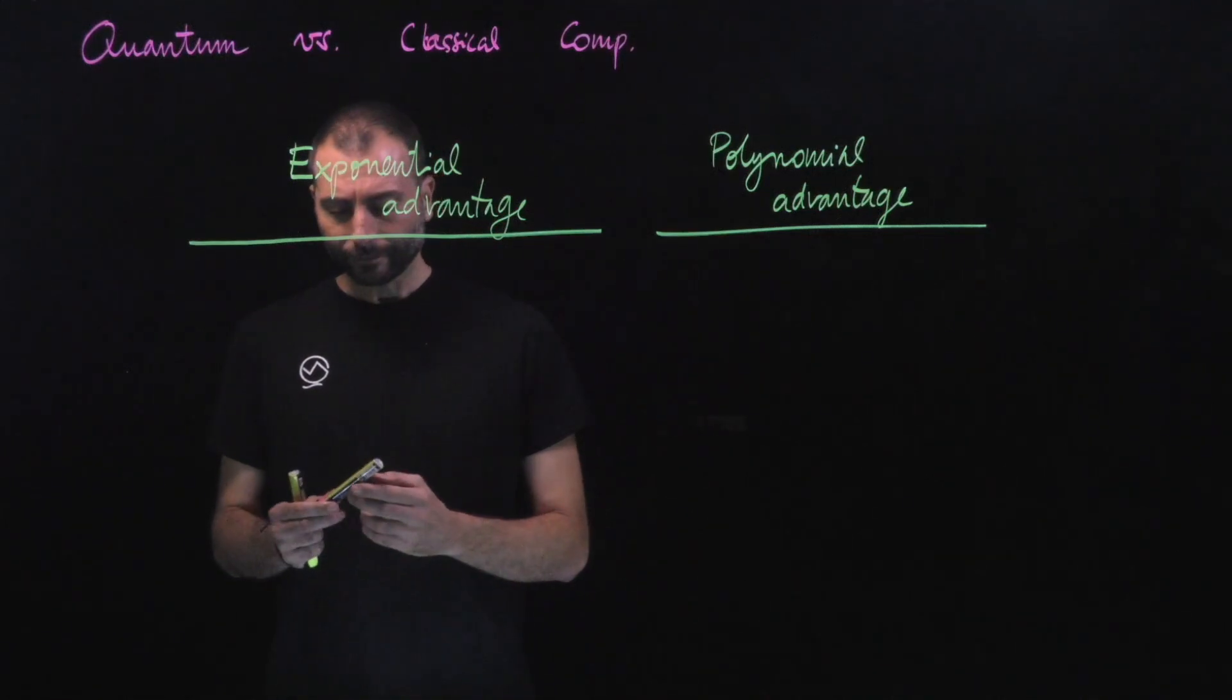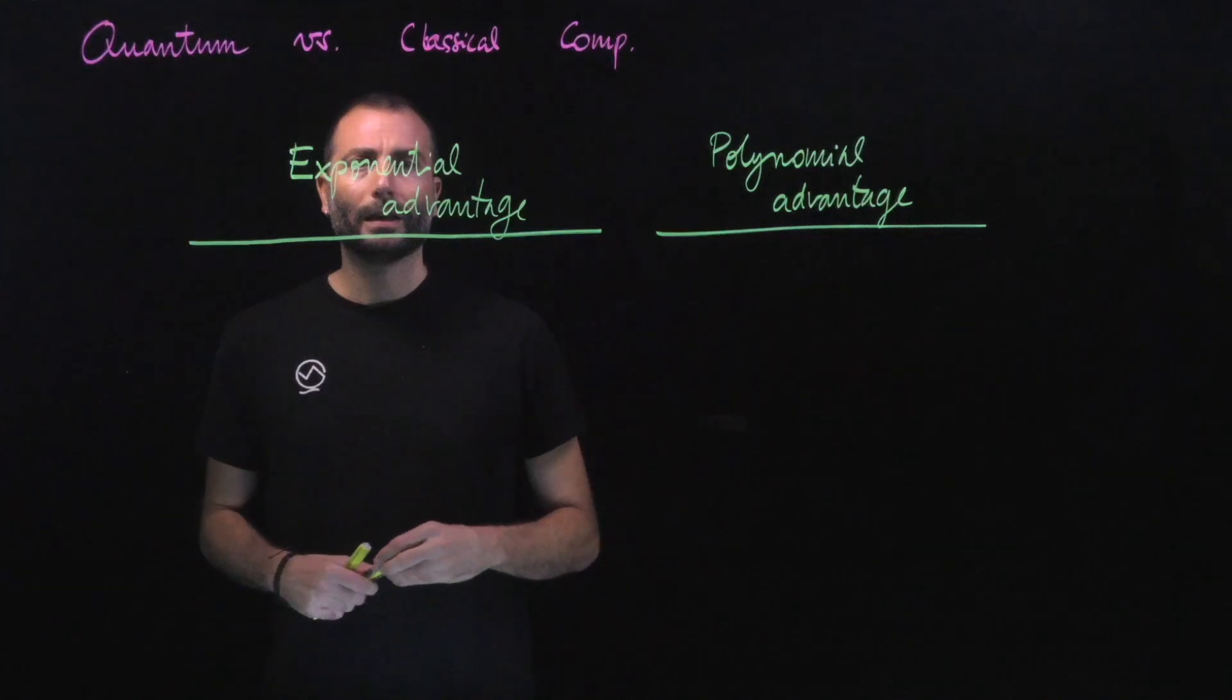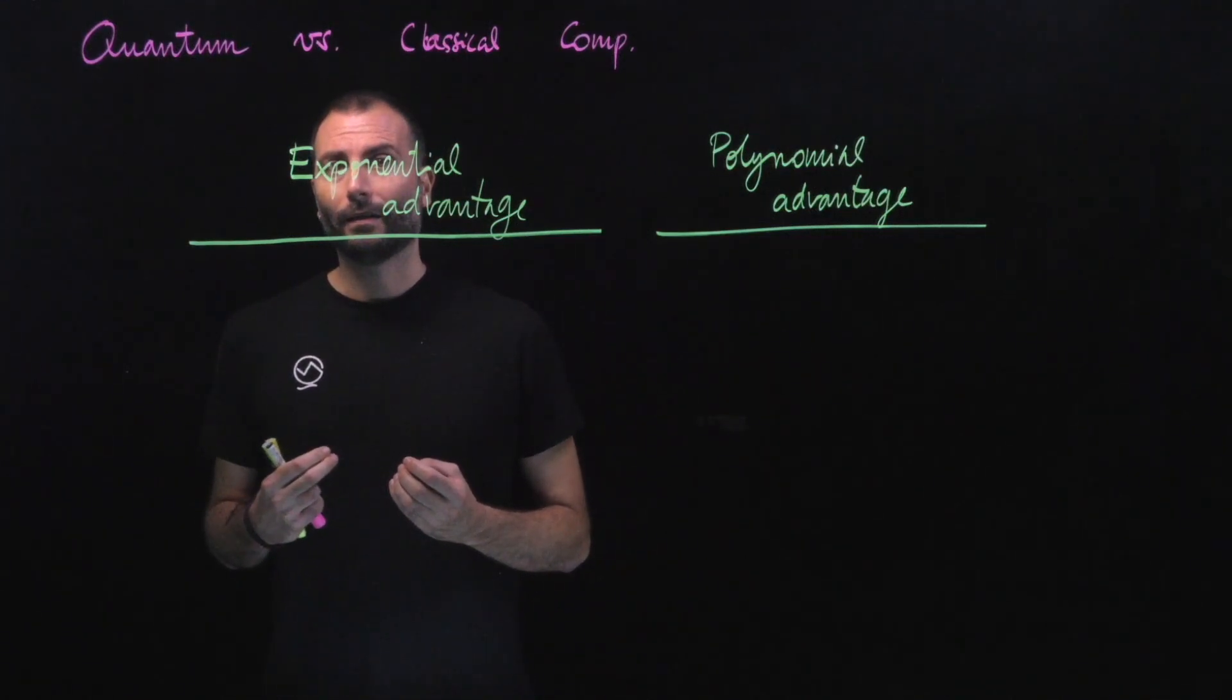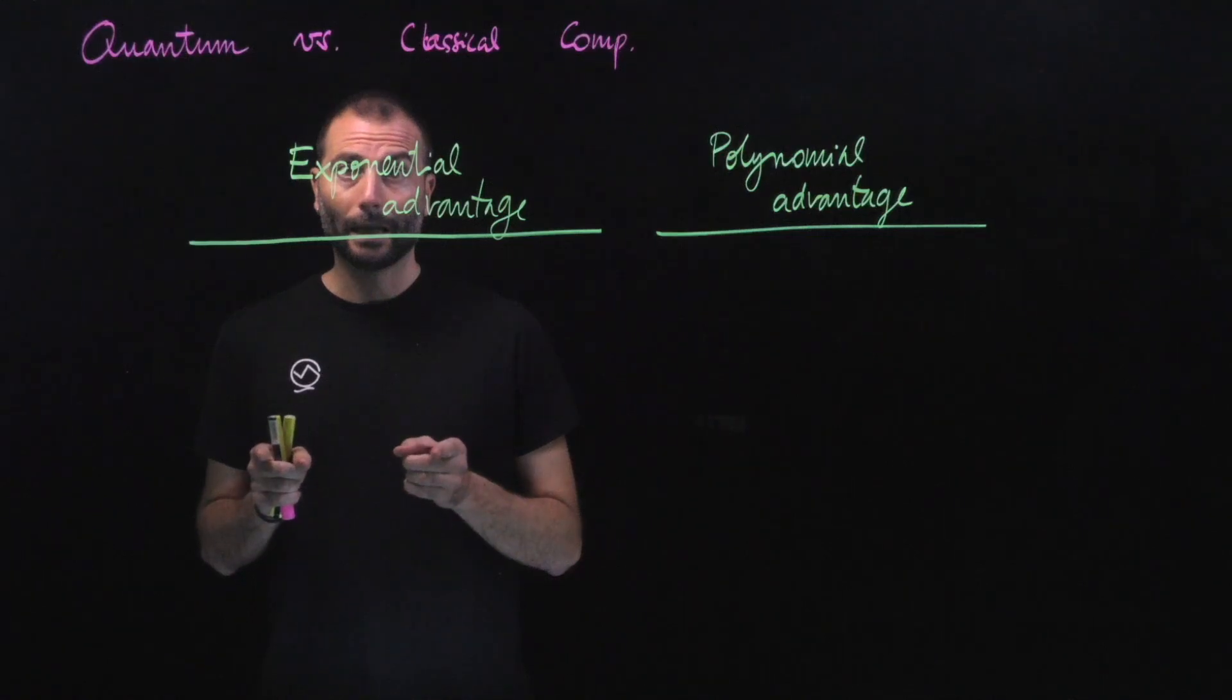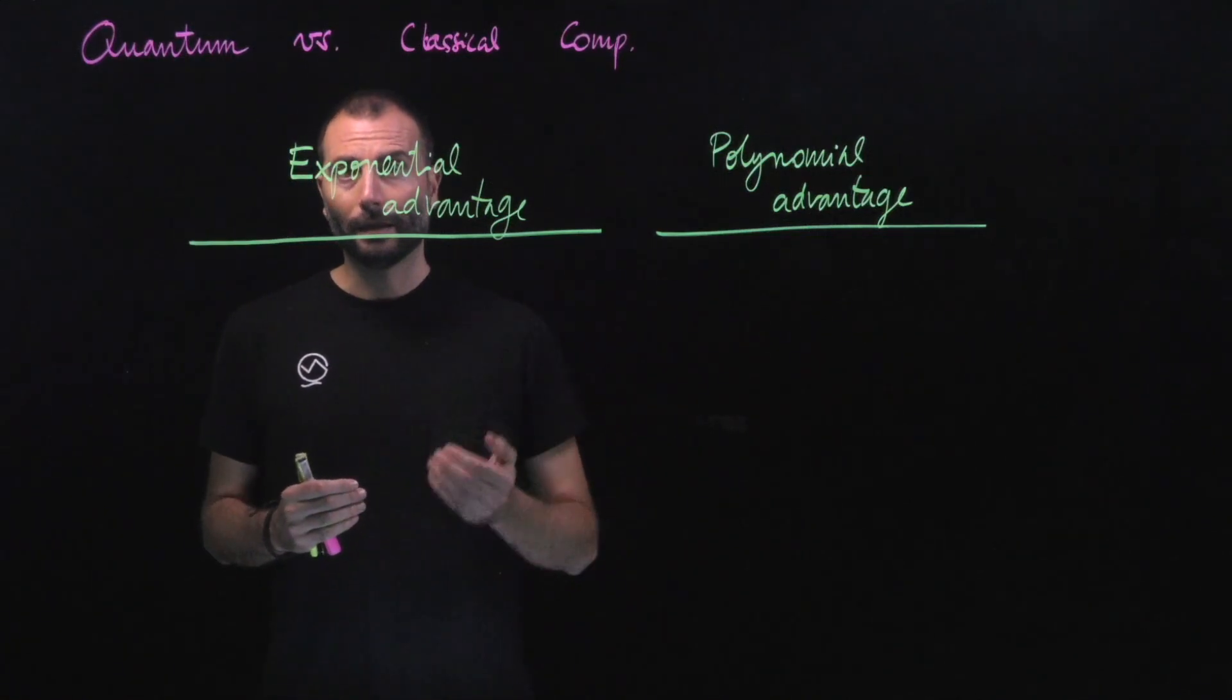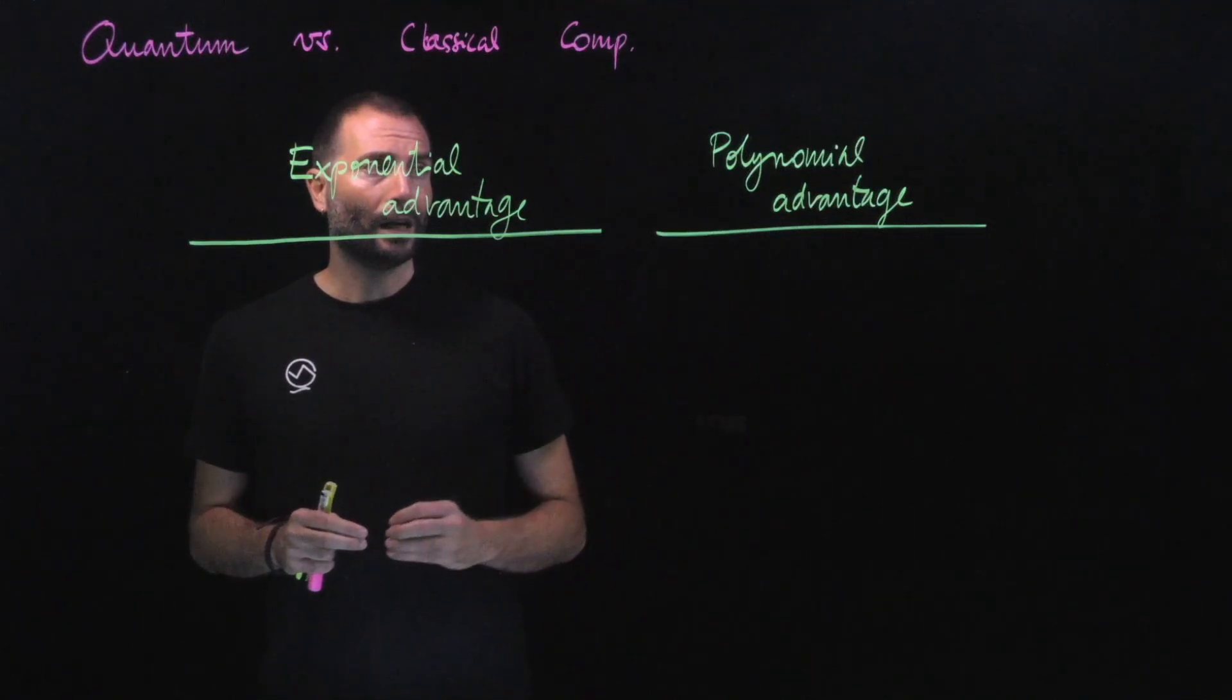When we say exponential advantage, we mean that if solving a problem will require an exponential time in the size of the input on a classical computer, we expect this effort to be polynomial on a quantum computer. This is what we mean by exponential advantage. By contrast, polynomial advantage, an example could be like Grover's algorithm, right? We know that if it requires an order of N in a classical computer, it's square root of N in a quantum one, so we have a speedup of power two at most.